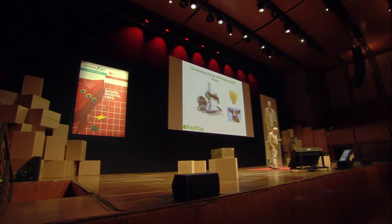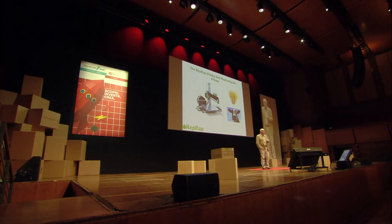The RepRap machine not only makes itself, it's rather like wheat or cows. They make themselves, but they also make something useful to us. Wheat makes flour, which makes bread. Cows make milk, meat, and cheese, and so on.